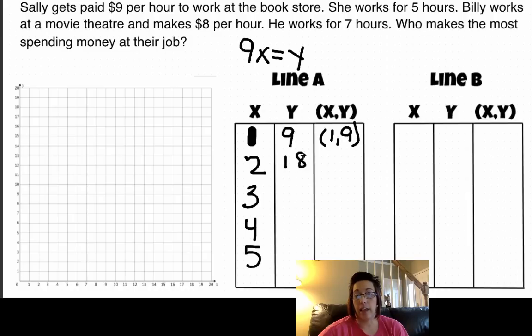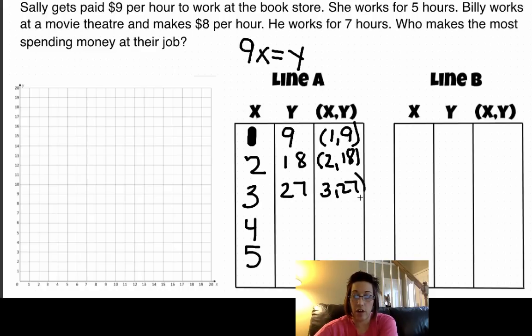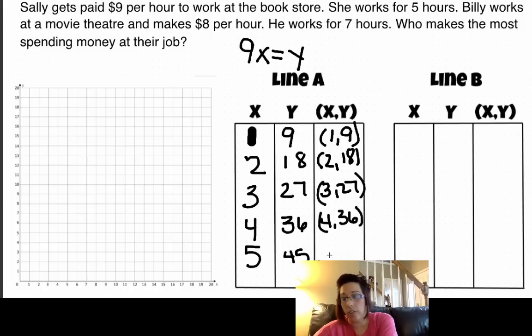Nine times two is 18. So for two hours, she makes $18. Nine times three is 27. So for three hours, she makes $27. Nine times four is 36. So four comma 36. And nine times five is 45.